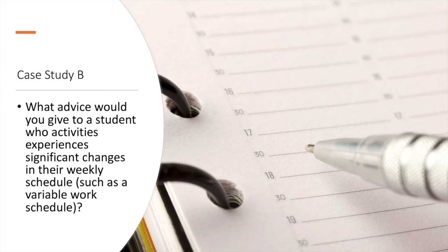At this point, pause and take some time to apply. Take out a paper weekly schedule template or download an online version and begin the weekly schedule planning. This doesn't need to be a final schedule — you can make adjustments later. Based on what you know now about your time commitments, what do you think an ideal weekly schedule might look like for you? Once you've done a draft, continue on in the workshop.